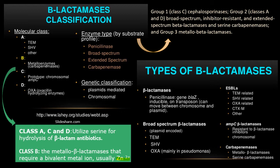Depending on the substrate profile, enzyme type classification gives us examples such as penicillinase, broad spectrum beta-lactamases, extended spectrum beta-lactamases, and carbapenemase. Then depending on genetic classification, resistance is either plasmid mediated or chromosomally mediated.